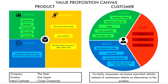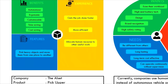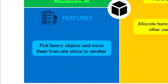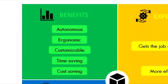Now for the product side of the value proposition canvas. Starting with the features of our product: its primary function is to pick up heavy objects and move them from one place to another. For the benefits: first, it is autonomous, meaning it can conduct specified movements without constant supervision from humans. Second, it is ergonomic, making it very efficient. Finally, it is customizable — depending on the requirements from a client, the robot can be changed accordingly. It is also both time and cost efficient for client use.